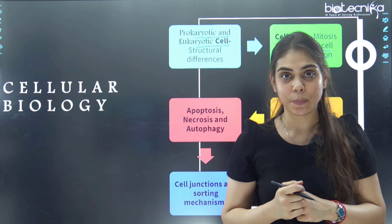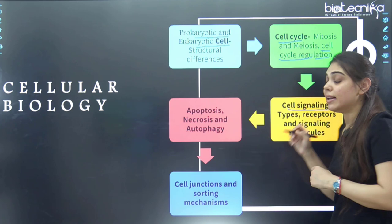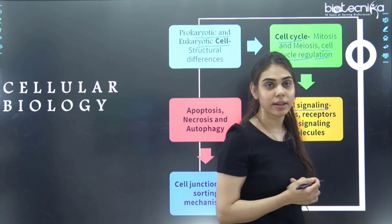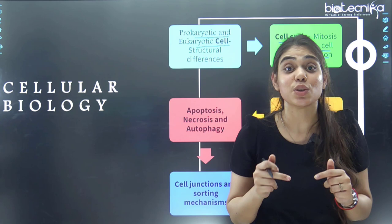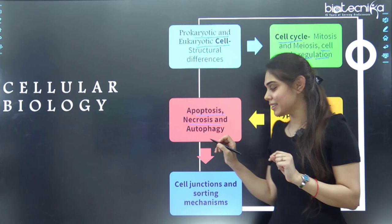You should also know cell signaling: the types of cell signaling, how a cell communicates, what receptors are involved, the classes of cell signaling, and what signaling molecules are related to specific receptors. Also, knowledge of apoptosis, necrosis, and autophagy is needed. Lastly, cell junctions like cadherins and integrins — just the basic concepts.